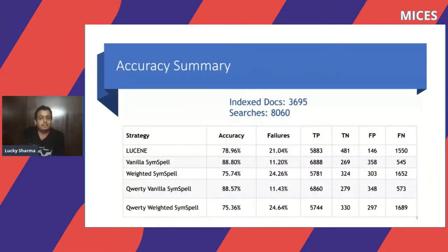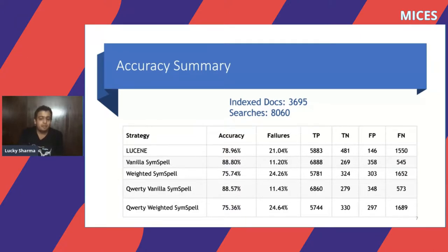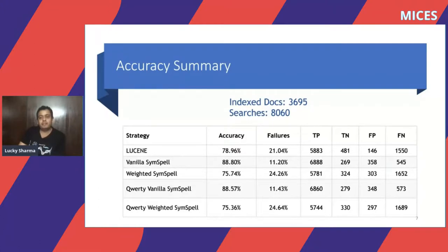Here is our accuracy summary. We indexed 3,695 items and performed 8,060 searches. With Lucene, it gave a lot of false negatives — 1,550. With vanilla SIM spell, it gave 545 false negatives, and with our customized version it was 573 false negatives. The true positives also increased significantly compared to Lucene. That's why we planned to move to Solr — to leverage the improved accuracy from SIM spell.